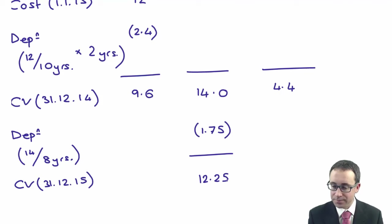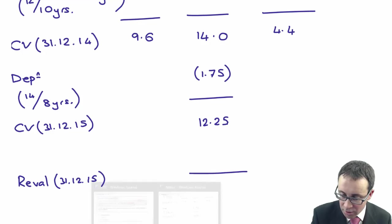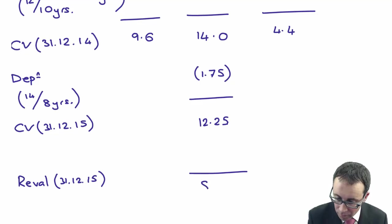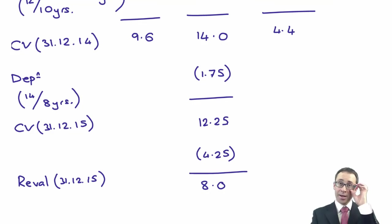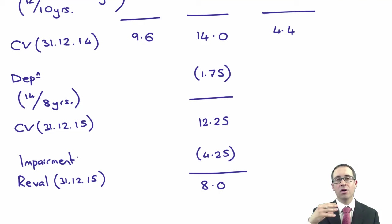But we know that's not the carrying value. The actual revalued amount at 31st of December 2015 was 8 million. So there is an impairment of 4.25 million. That's the impairment on the asset. Now we need to be careful because any impairment on a revalued asset goes first to any revaluation surplus, and then anything extra above that will go to your statement of profit or loss.